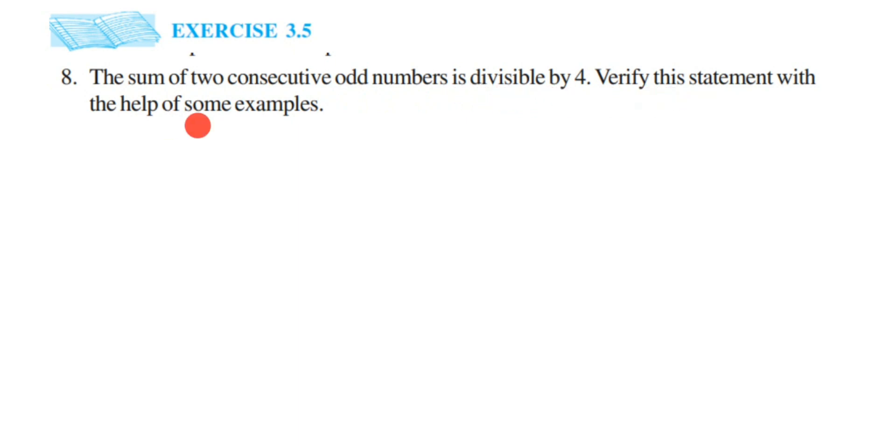Now what they are asking is about the sum of two consecutive odd numbers. Consecutive means numbers which come one after the other. So suppose I'm going to take odd number 5. After 5, the next odd number is 7, right? So 5 and 7 become consecutive, and that sum should be divisible by 4. We have to take examples to explain this.